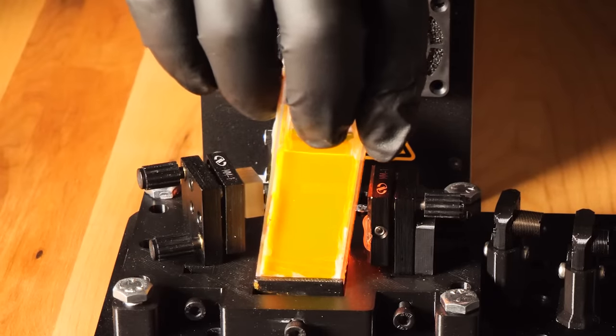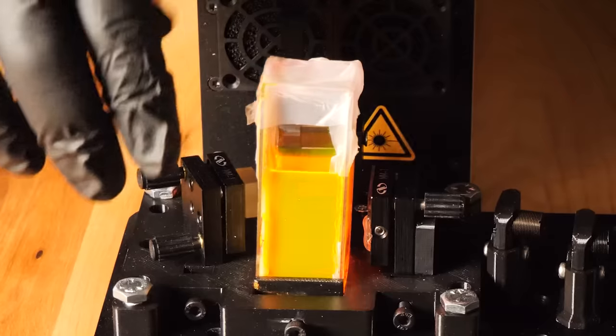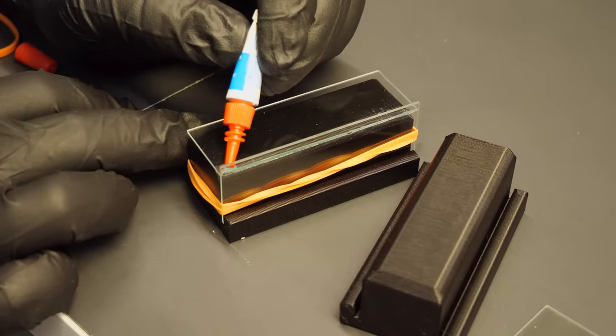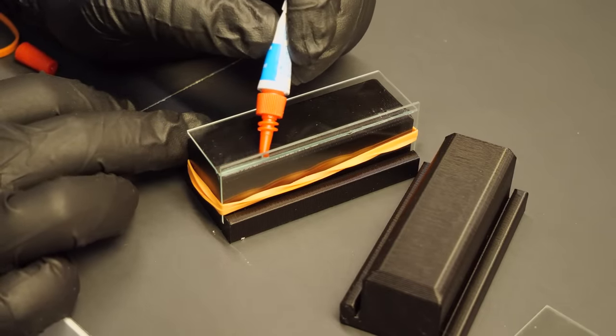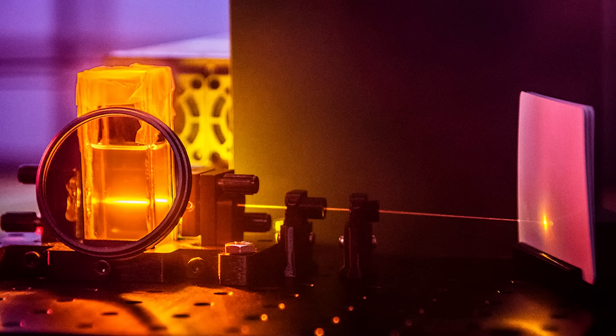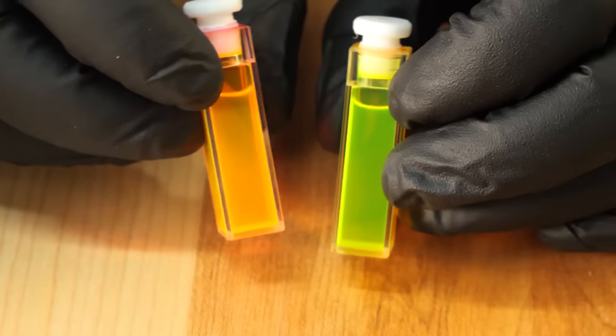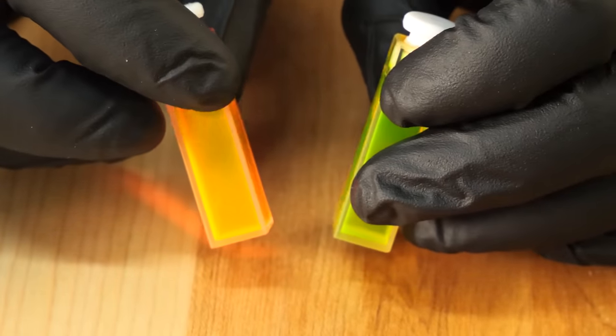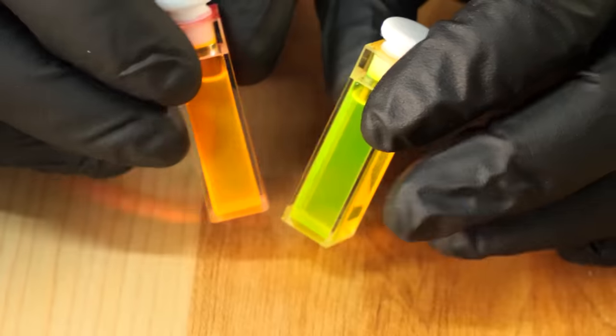When we finally caught on to that, we redesigned everything to use these homemade cuvettes made from microscope slides that we superglued together with the help of some 3D printed jigs. And while this worked relatively well, we eventually bit the bullet and bought some nice quartz cuvettes that are made specifically for this, which honestly we should have just done at the start.